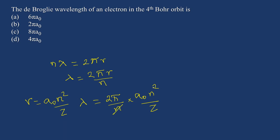So this n square and n will get cancelled, so I will be having an equation of 2 pi a zero into n divided by z. So they have asked an electron in fourth orbit.